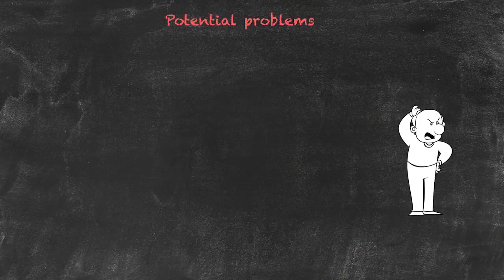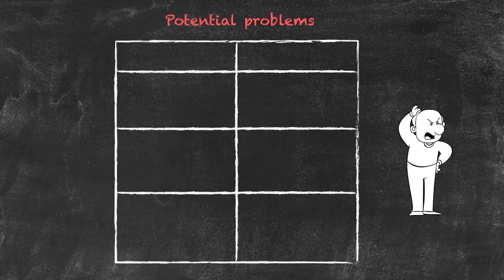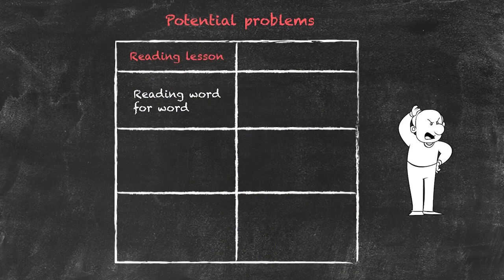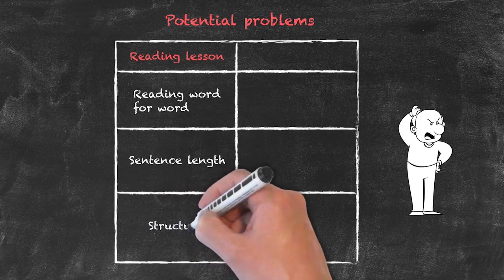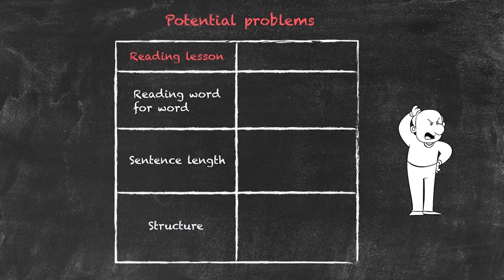Before looking at the actual receptive skills lesson, it's worth thinking about potential problems. In a reading lesson, students reading in a non-native language tend to read every word as a separate piece, making it very difficult to get an overall impression of the text. Secondly, the sentence length in many articles will be very long, and students may not be used to that structure. It's important to think about whether the text has actually been written in a way that will be fairly easy to read, and whether students are familiar with the structure of the article — whether it's formal, a postcard, or an email.